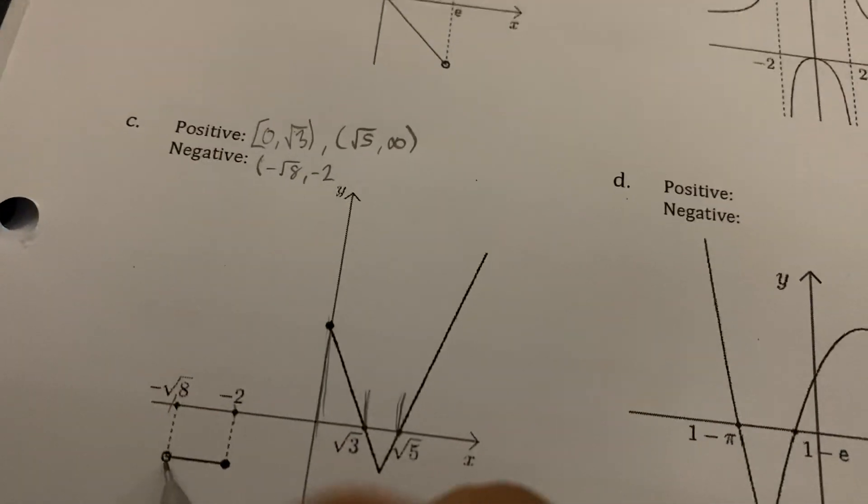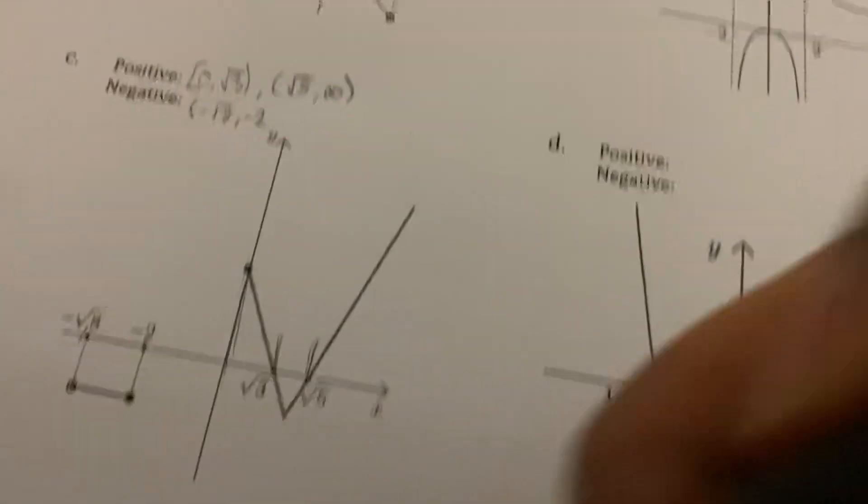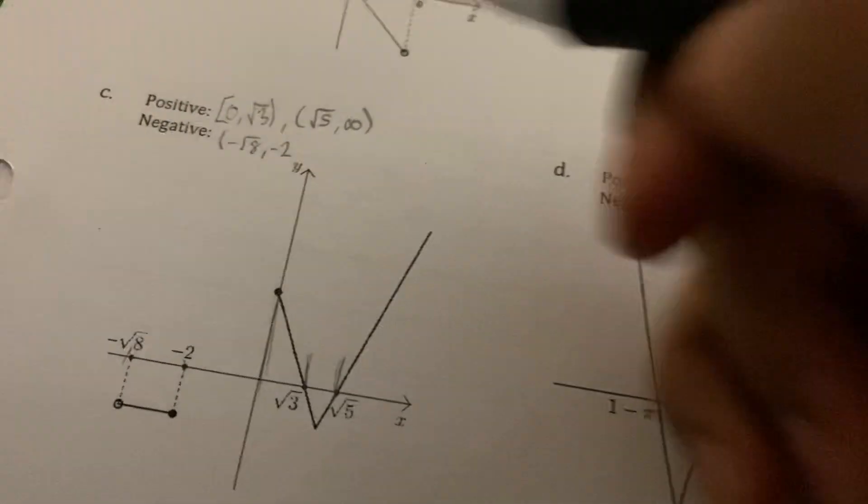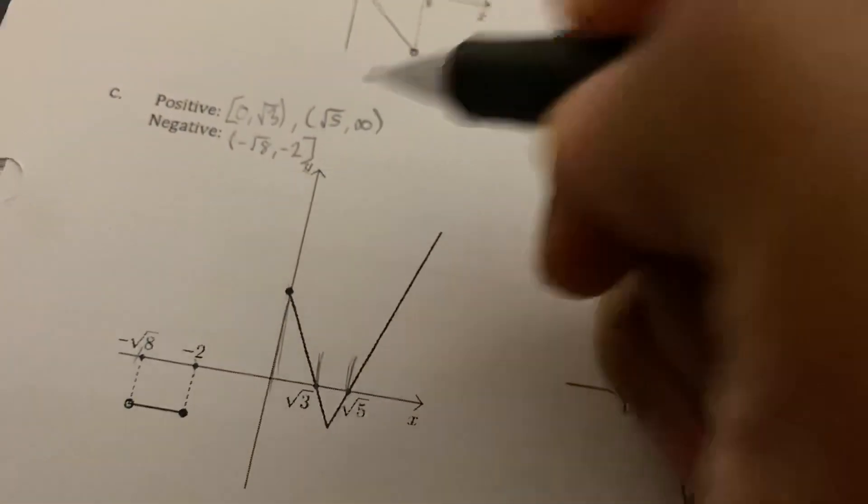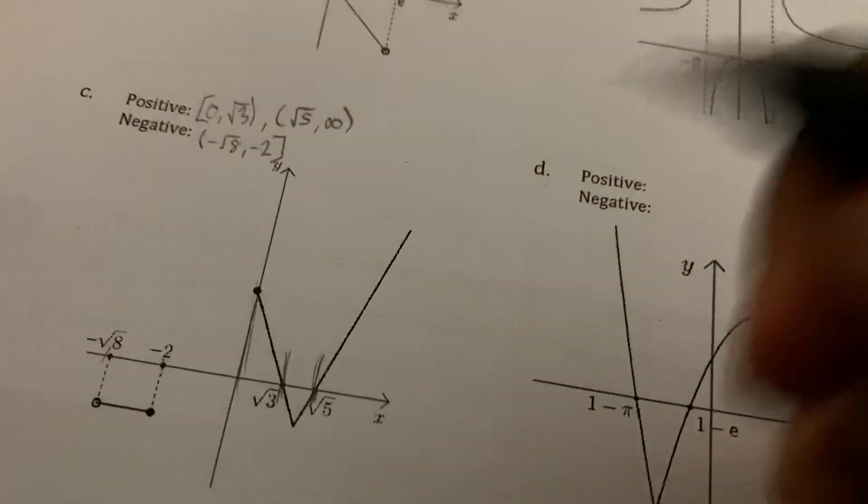Notice this is an open circle, so that's why I put parentheses there, but this one is closed. And then it's also negative from here to here, so from square root of three to square root of five.